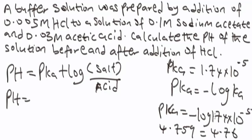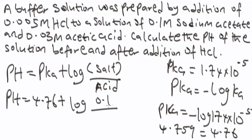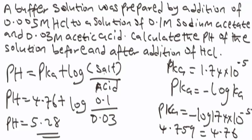Calculating, pKa ≈ 4.76 (to two decimal places). So the pH = 4.76 + log(0.1 / 0.03). Punching this into the calculator gives pH = 5.28 (to two decimal places). This is the pH of the buffer solution before the addition of hydrochloric acid.